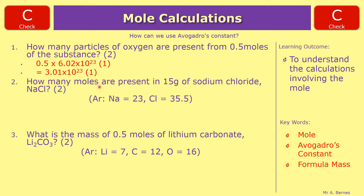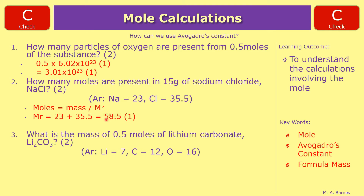Question 2: how many moles are present in 15 grams of sodium chloride NaCl? Moles = mass divided by Mr. Your mass is 15 grams and your Mr is 23 + 35.5 = 58.5. So moles = 15 divided by 58.5, which gives 0.26 moles. One mark for working out the formula mass of 58.5, and one mark for dividing 15 by that to get the correct answer.